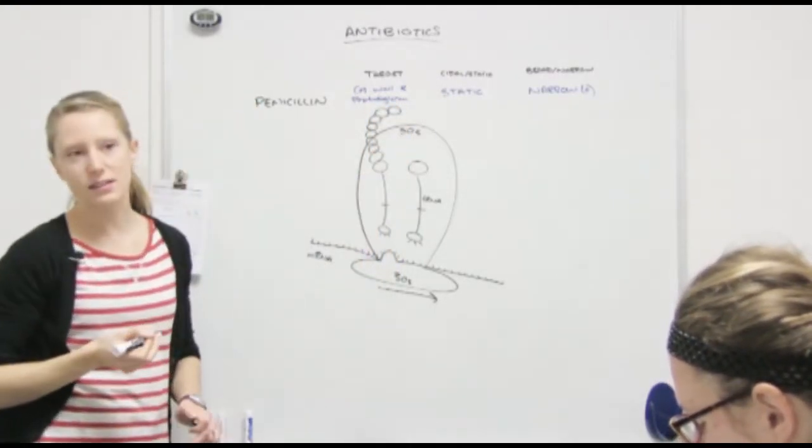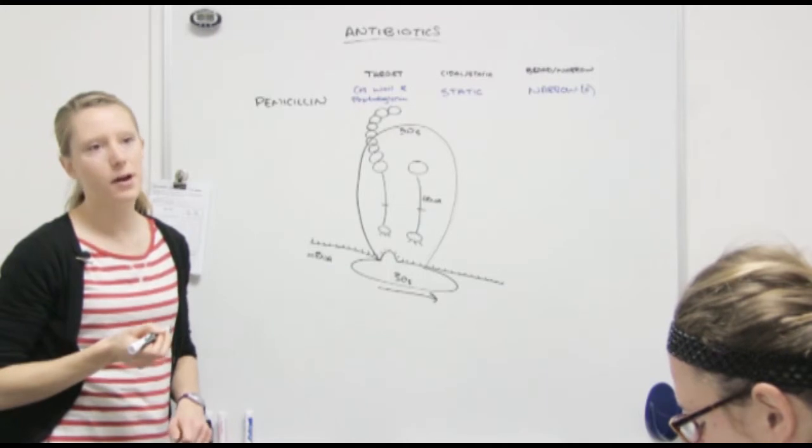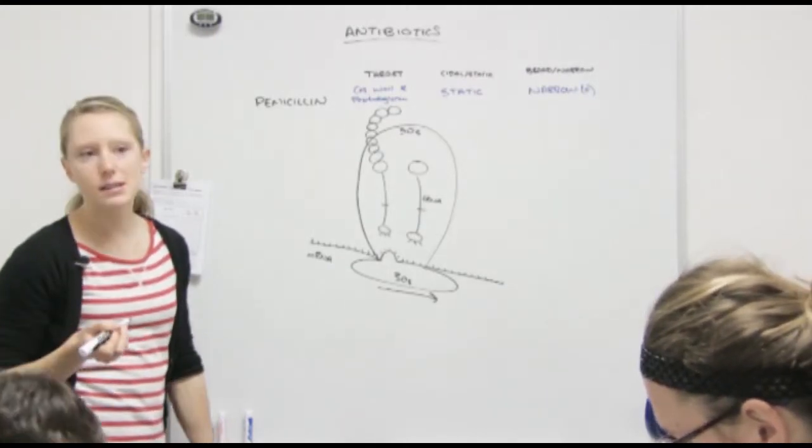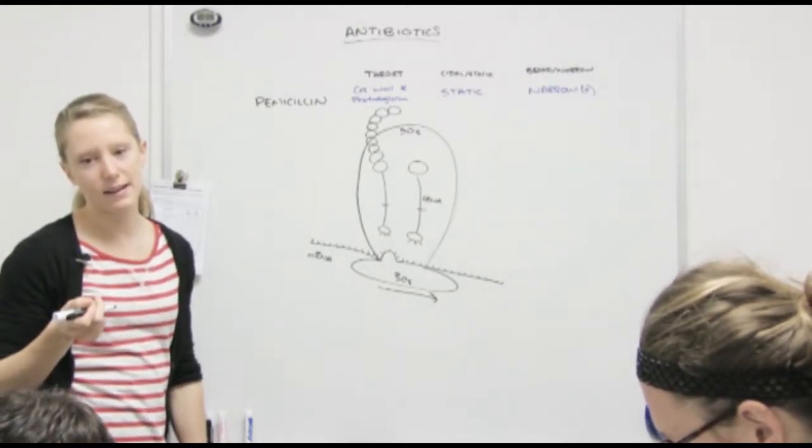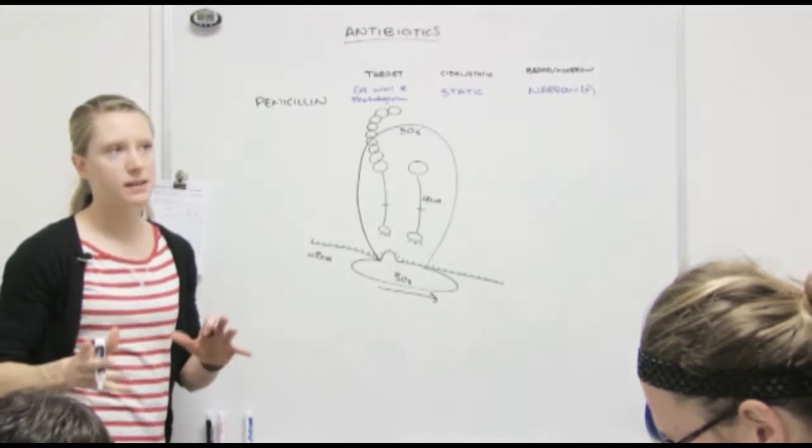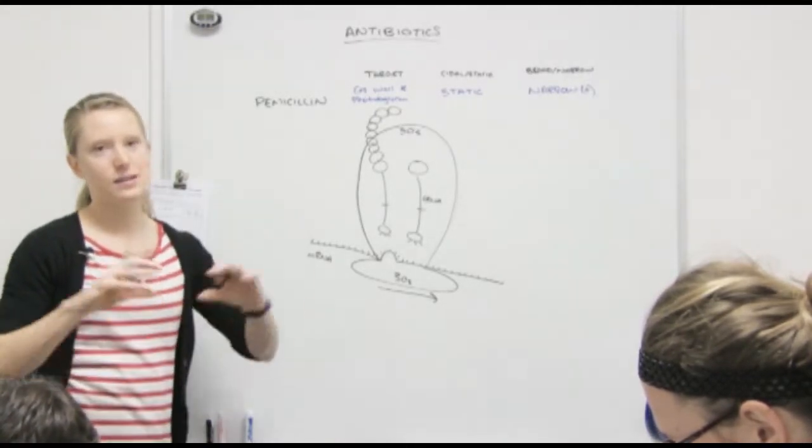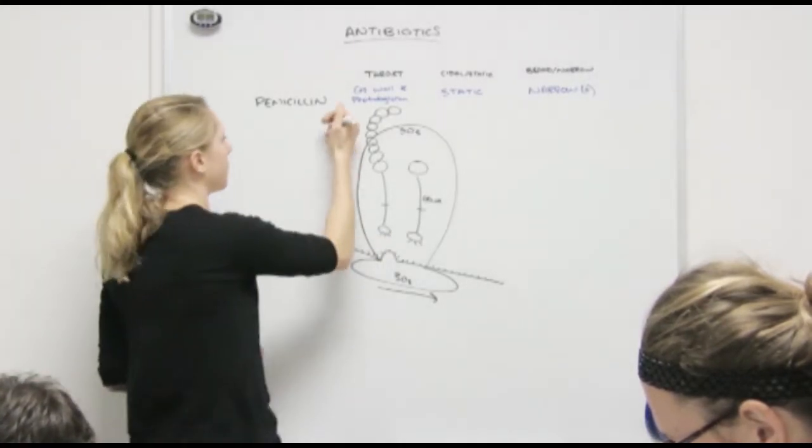What is that chain called? Polypeptide chain. Polypeptide chain. Which is the same thing as a protein, except a polypeptide chain is a protein before it's folded. So in its linear form, it's called a polypeptide chain.